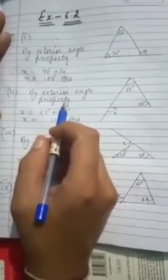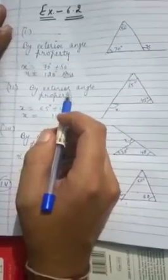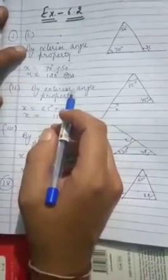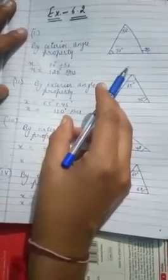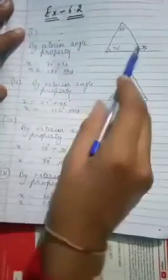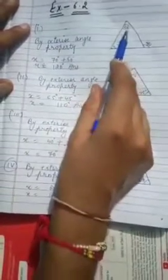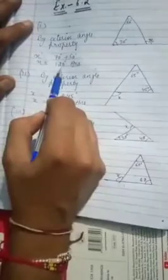Now students, moving on to our next exercise. That is based on another property of a triangle. Here is a diagram given. We have to find out the value of X. We have an exterior angle property where this angle is equal to the sum of these two angles. By exterior angle property, we can say that an exterior angle of a triangle is equal to the sum of the two interior opposite angles.